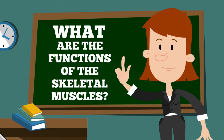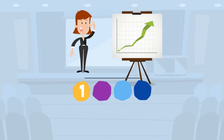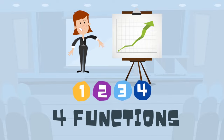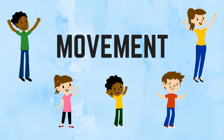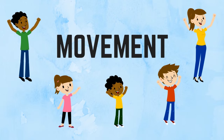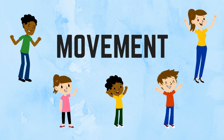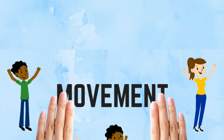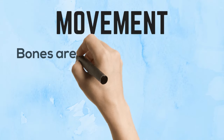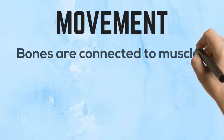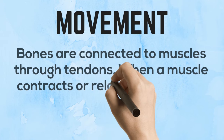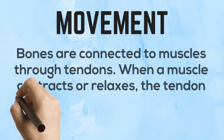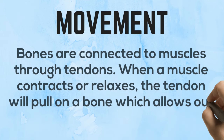What are the functions of the skeletal muscles? There are many functions, but we're going to talk about four of them. The first function is movement. Movement is very important when it comes to skeletal muscle tissue. Bones are connected to muscles through tendons. When a muscle contracts or relaxes, the tendon will pull in a bone, which allows our body to move.